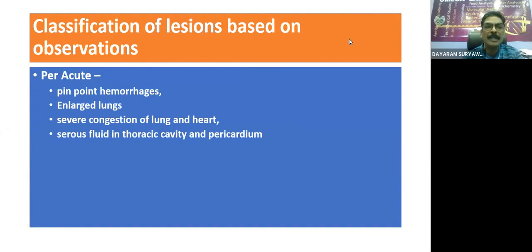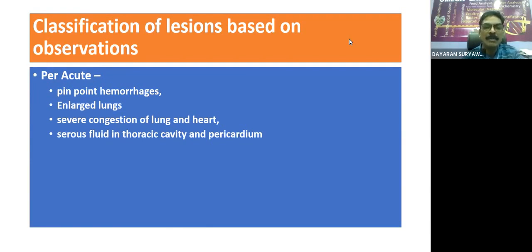We can classify different lesions of the lung based on observations into the per-acute form. In that case, we can get pinpoint hemorrhages on the lungs, enlarged lungs, and severe congestion of lungs and heart. Serious fluid can be present in the thoracic cavity and pericardium. These are the simple post-mortem lesions we can get in the per-acute form.